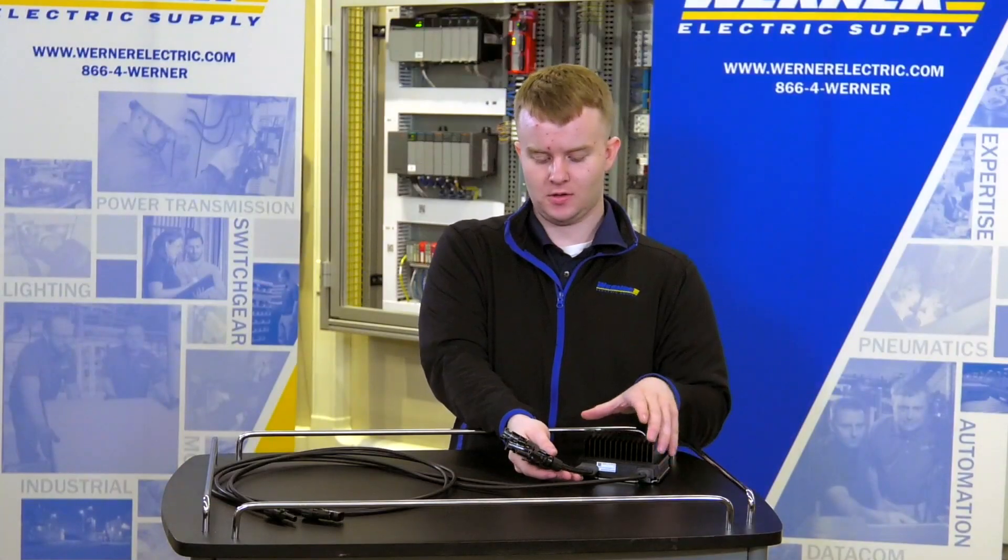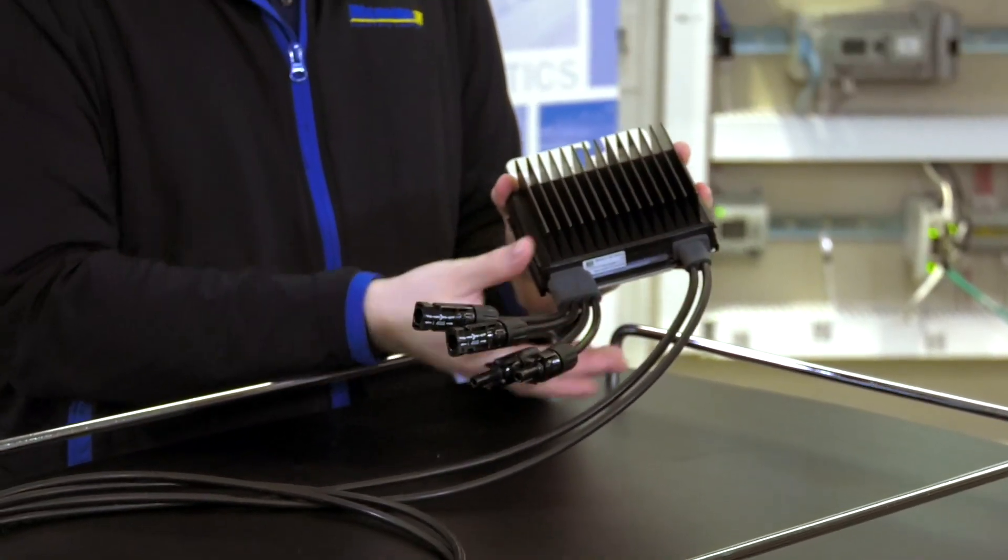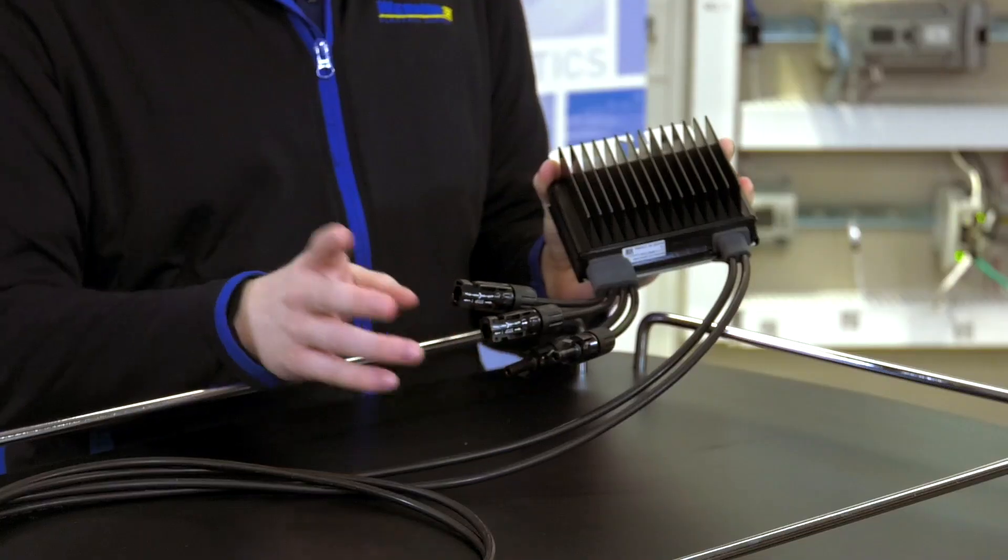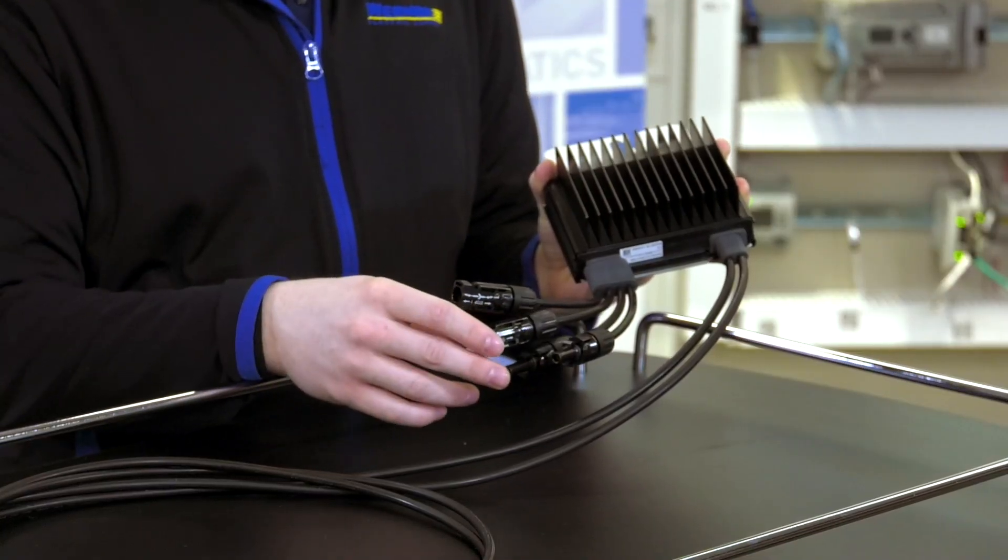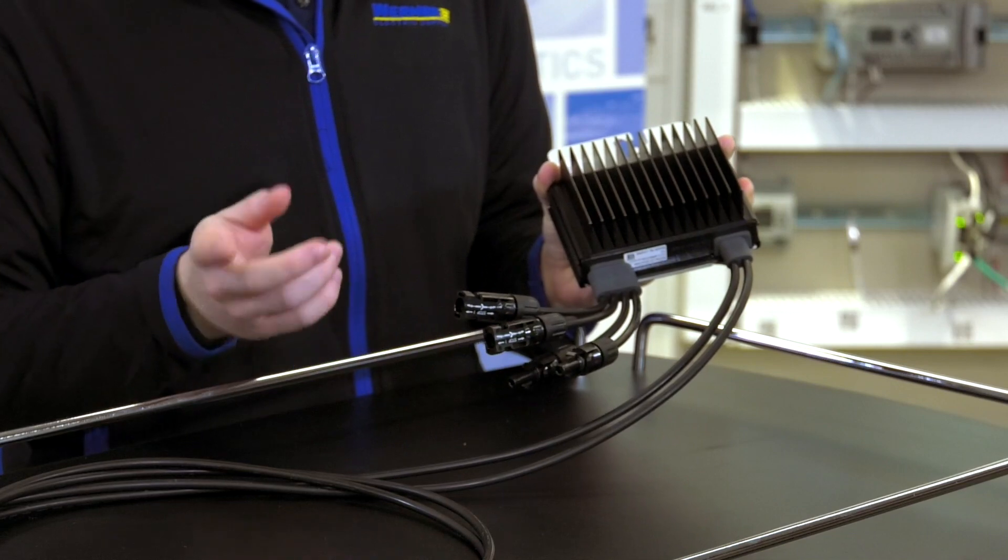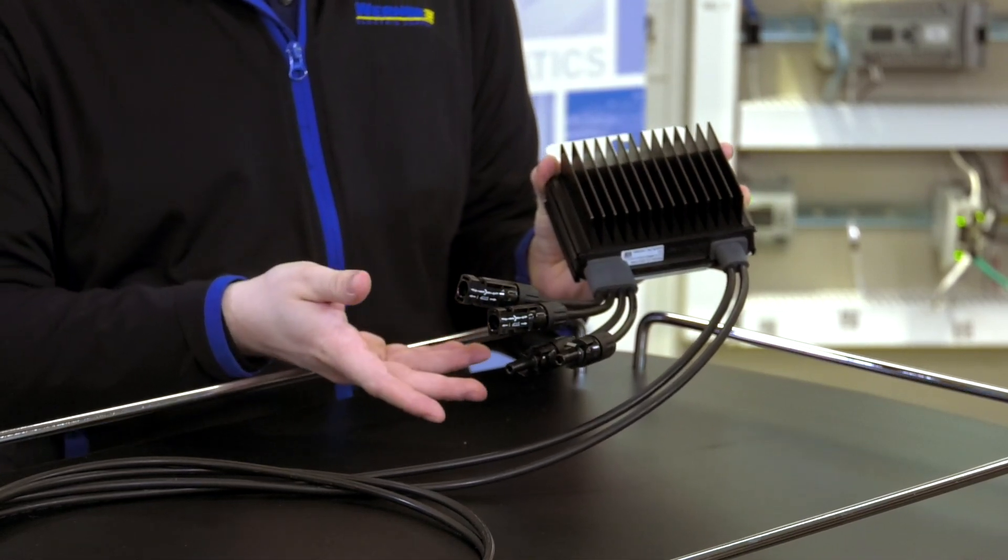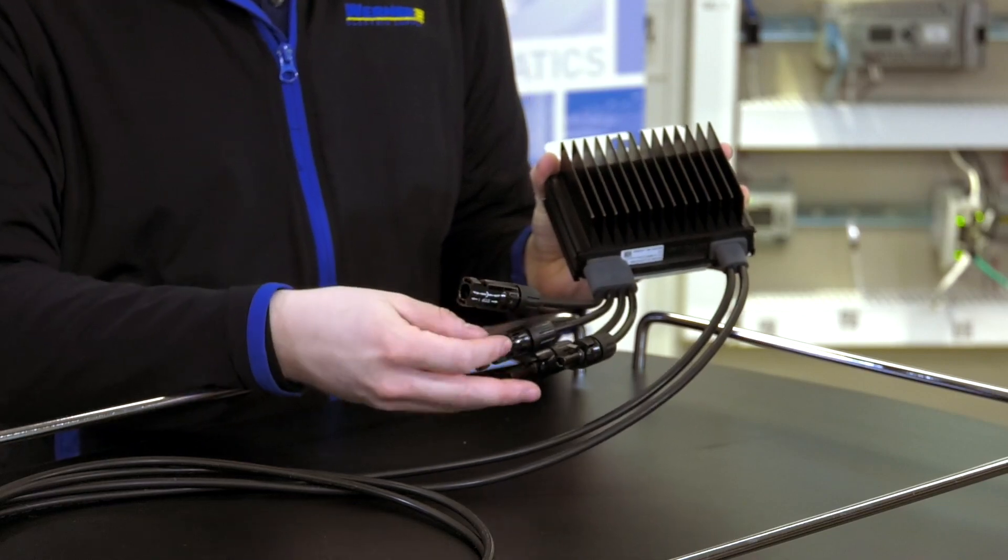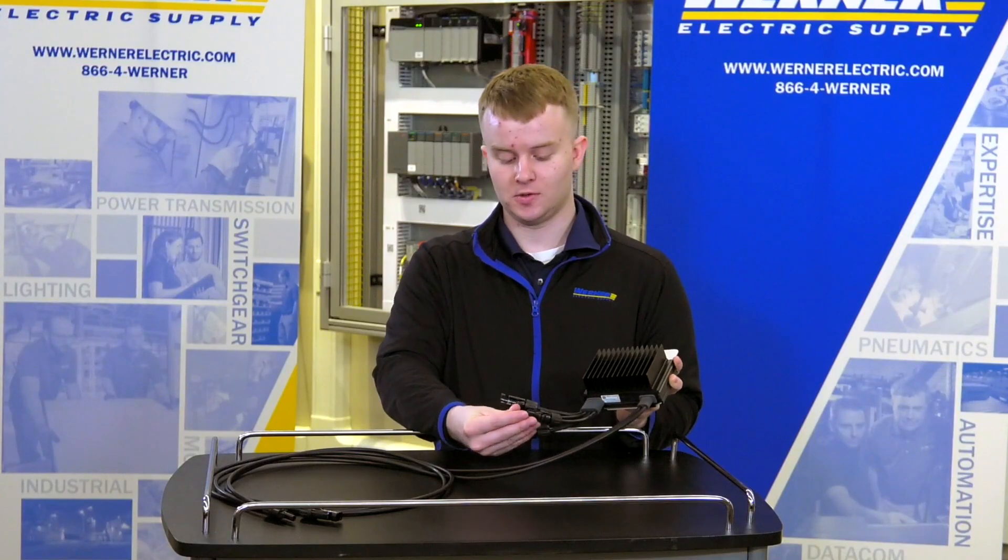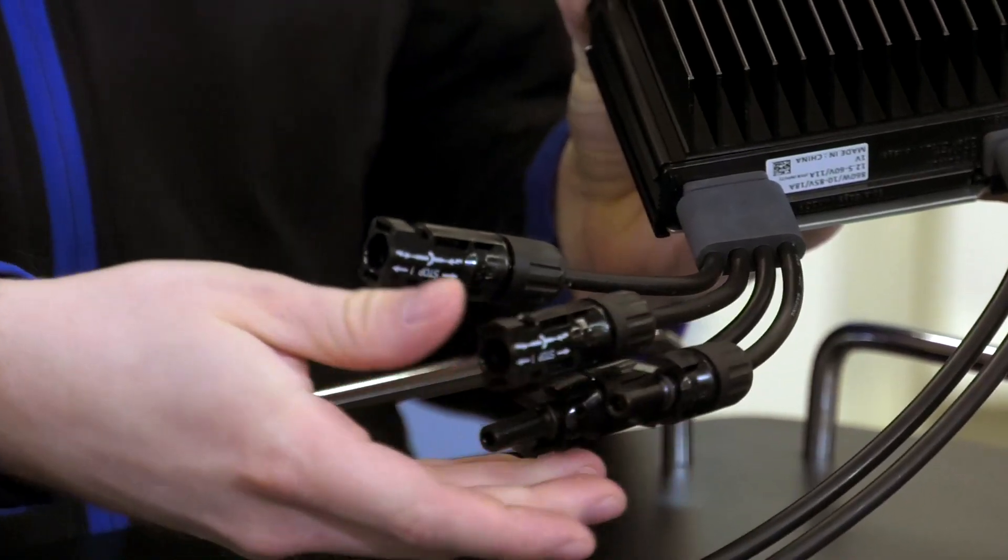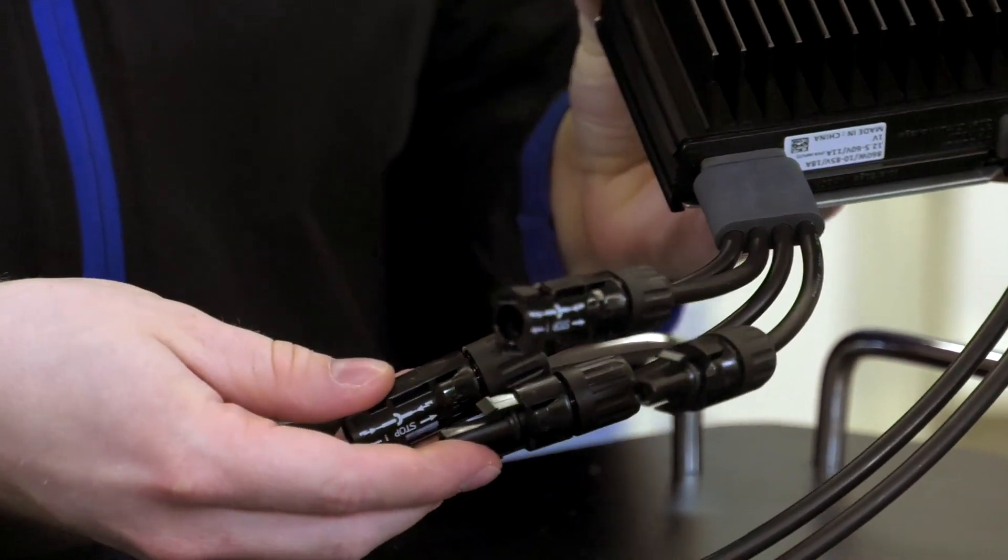These are the input cables right here. You'll connect to two different solar modules. The solar modules are wired in parallel, which is how you meet the module level shutdown code requirement. One would be going with these two cables right here and then the other solar module with these two.